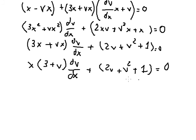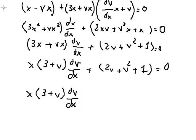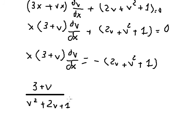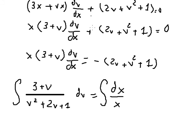We move this term to the right side by dividing both sides. The x goes to the right, and the expression goes to the left. We get 3 plus v over v squared plus 2v plus 1, times dv, equals negative ds over s. Then we put the integral on both sides, and we note there is a negative sign here.